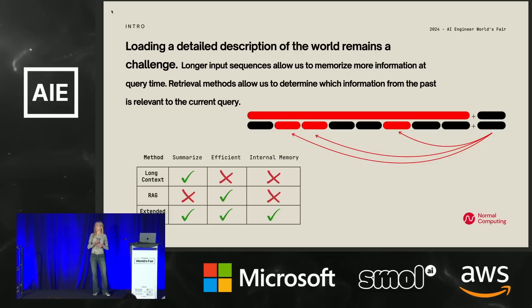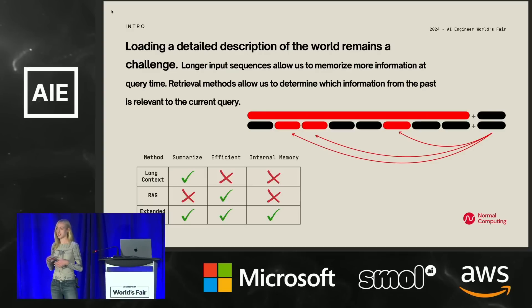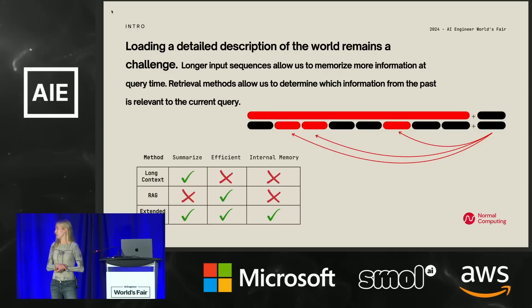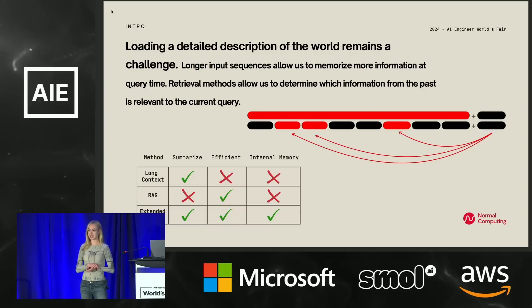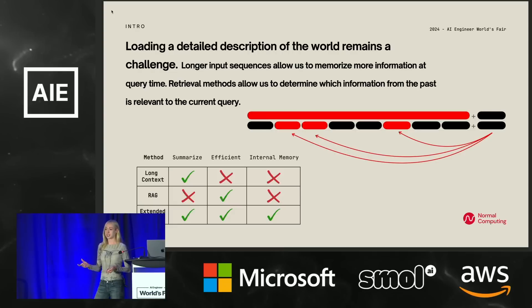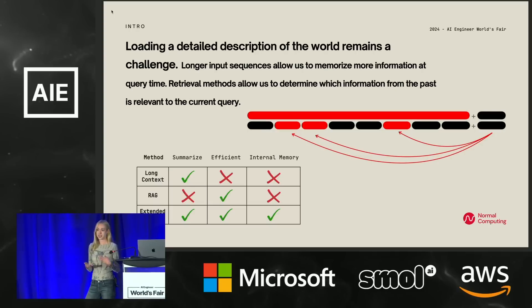Long context seeks to extend the context window of the transformer model. We train language models on sequences of a fixed length, and then we're trying to say, can we extend that so we can include more in the context during inference time? Fine-tuning is usually how this is done, and that's awfully expensive. More so than that, including all of that context in your prompt can confuse the model with a lot of irrelevant information. Conceptually, it seems wasteful — if we're doing question answering over a big code base, our query most usually does not need to reference all of those different function definitions, but just needs some subset of them to answer the query correctly.